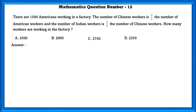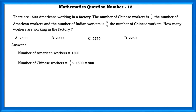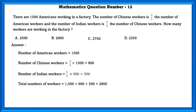Mathematics question number 12. There are 1,500 Americans working in a factory. The number of Chinese workers is 3/5 of the total number of American workers, that is 900. The number of Indian workers is 5/9 of the number of Chinese workers, that is 500. So, the total number of workers is American plus Chinese plus Indian, which equals 2,900.